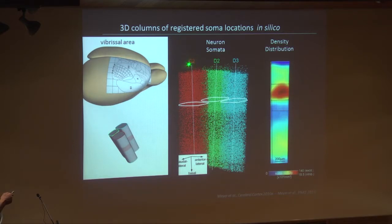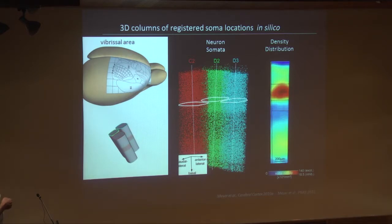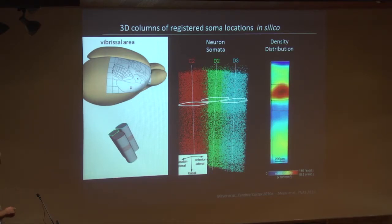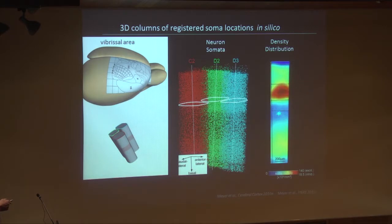We have a 3D map of the entire vibrissa cortex. One way to quantify this is by heat maps. It just shows the well-known fact that there is a granular layer with a very high cell density which gradually falls off in both directions, and then there's a second peak towards the corpus callosum and the white matter. This is all done in 3D now, so we can have a 3D heat map or heat volume, which is very helpful if you want to study the connections between different cell types.